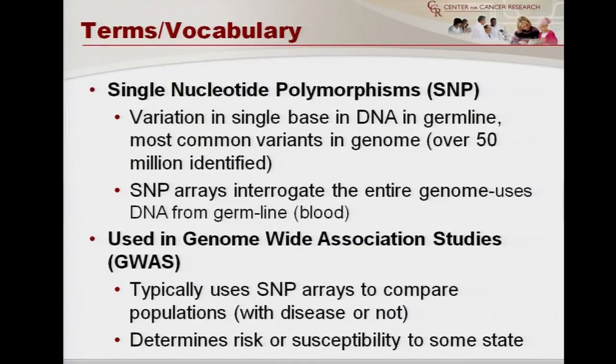Let me first define a few terms. Single nucleotide polymorphisms, or SNPs — I'm sure you've come across this in your reading or even in the newspapers. What we mean by that is a variation in a single base in the DNA: A, C, G, T — the most common variants in the genome. Last I looked there were over 50 million SNPs identified.